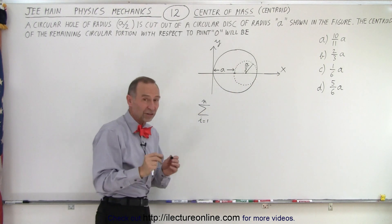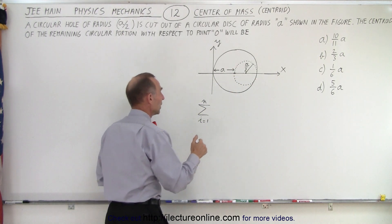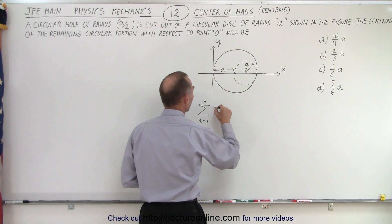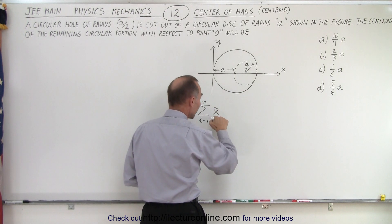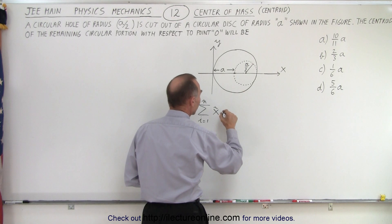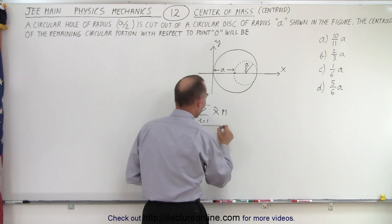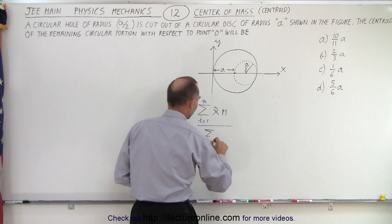because there's perfect symmetry in the y direction, we only worry about the x direction. It would be the centroid of each individual piece in the x direction times the mass of that object, and we sum that all up, divided by the sum of all the masses.